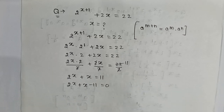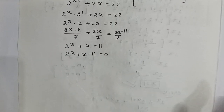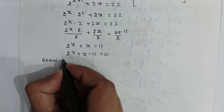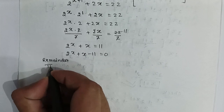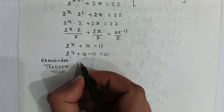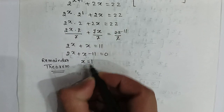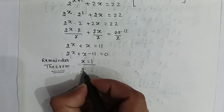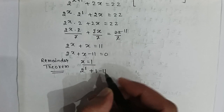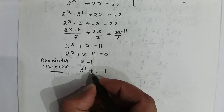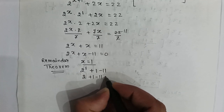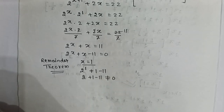If we use the remainder theorem, and we put x equal to 1, then it will be 2 to the power 1 plus 1 minus 11, which is 2 plus 1 minus 11. That is not equal to 0.